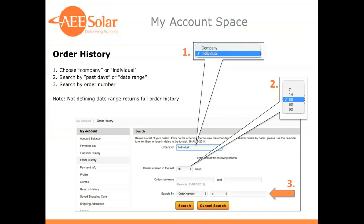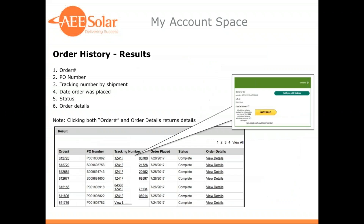Here is your order history page. You can search for orders placed by you specifically, or for orders placed by all registered users on Express within your company or organization. You can choose a date range or look-back period of 7, 14, 30, 60, or 90 days, and you can also search by order number. The results page shows the order number, your purchase order number, and the tracking number — which is dynamic, so clicking it takes you to the carrier to see the shipment status — as well as order status and order details.